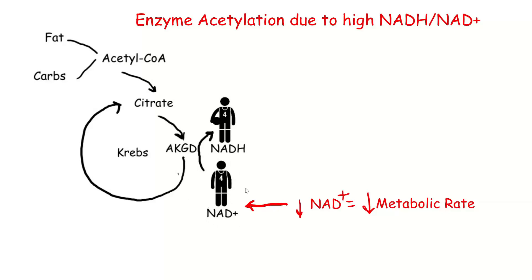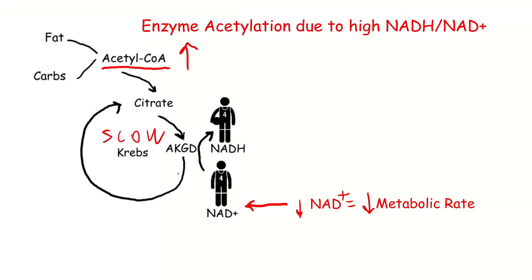The thing is, they need the NAD+ to go around the cycle. And so if you run out of NAD+, this cycle slows down. And what happens when the cycle slows down is that acetyl-CoA — the thing that feeds into the cycle — increases.